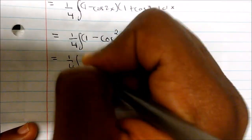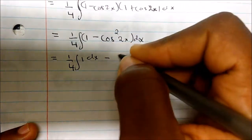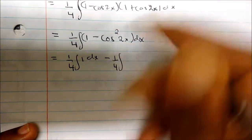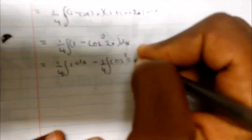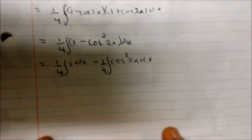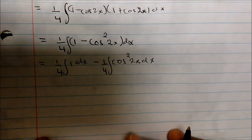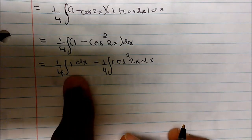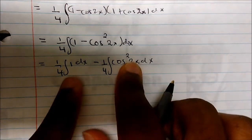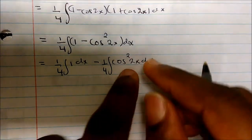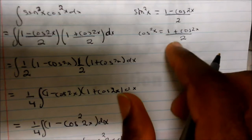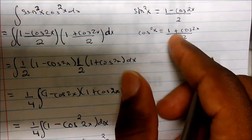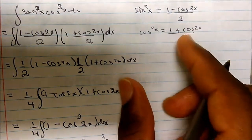Now I'm going to split up my integrals. This becomes 1 fourth times the integral of 1 dx, minus 1 fourth — because the 1 fourth has to be distributed — times the integral of cosine squared of 2x dx. We know the integral of 1 easily, but for cosine squared of 2x I'm going to use the same double angle formula again.